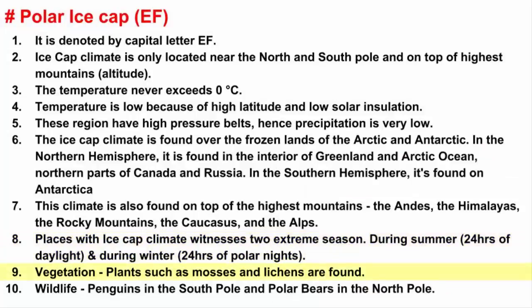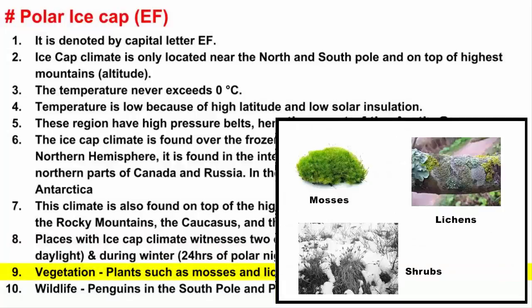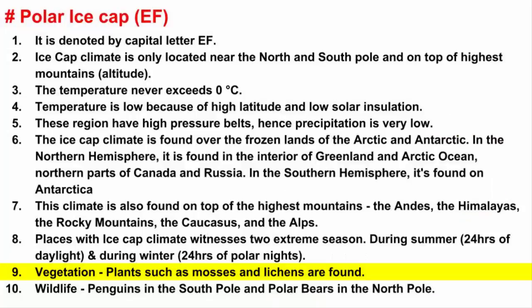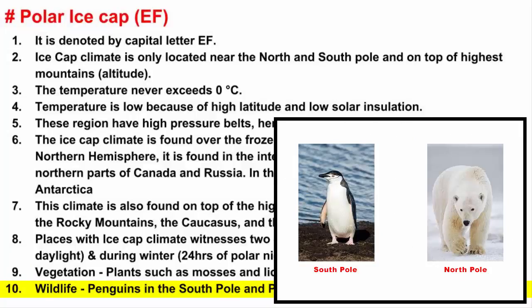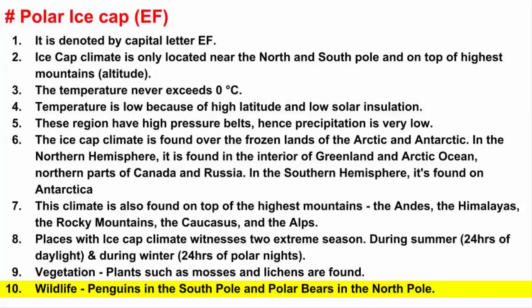When it comes to vegetation, in this harsh climate, some areas have plant life such as moss and lichen. Lichen is a mixture of fungus and algae. When it comes to wildlife, penguins in the South Pole and polar bears near the North Pole are amongst the animals that live in this harsh environment.